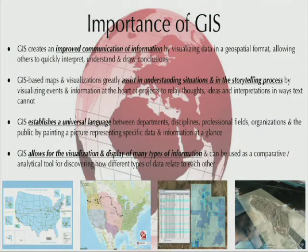GIS establishes a universal language between multiple disciplines, departments, professional fields, organizations, and the public. It's been said that a picture can paint a thousand words — in the case of GIS, a picture is painted that geospatially represents discipline-specific data and information that others can quickly access, understand, and interpret. GIS also allows for the visualization and display of many types of data and can be used as a comparative and analytical tool. There are very few types of information that cannot be expressed geospatially using these platforms, making them an excellent resource for presenting and visualizing information in a creative and innovative manner.